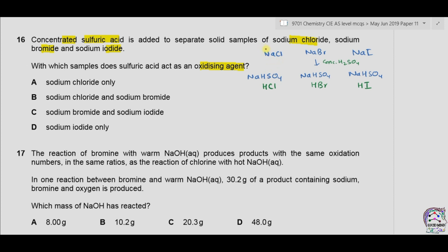So far, no change in oxidation state has occurred. For example, sodium remains +1, chlorine remains −1, and sulfur in H₂SO₄ remains +6. So sulfuric acid has not yet acted as an oxidizing agent. Upon further reaction, we see that HCl is not oxidized by concentrated sulfuric acid — there is no further reaction — so sulfuric acid does not act as an oxidizing agent with sodium chloride.